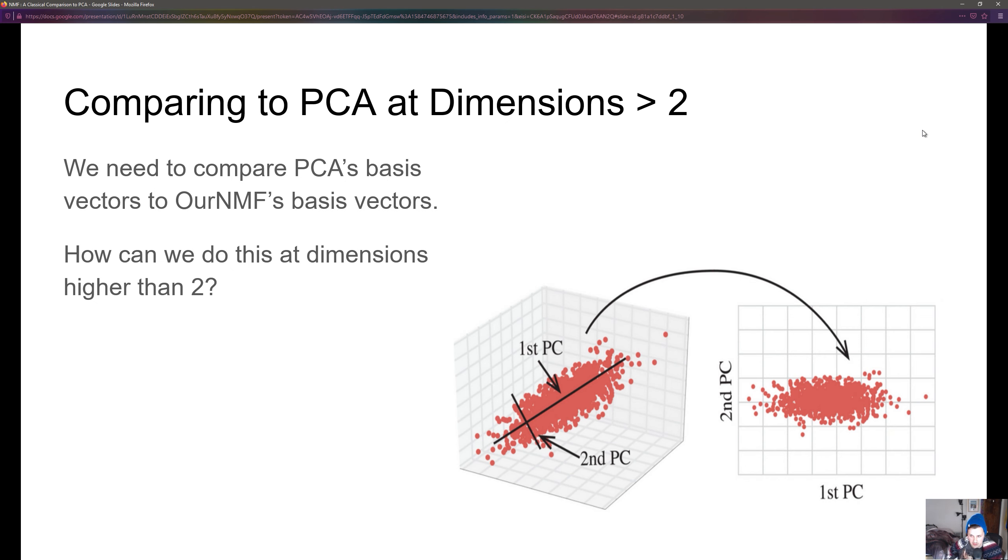When we talk about comparing PCA to NMF, it's pretty straightforward to do that at two dimensions. In this picture we can see that we have gotten two principal components from either NMF or PCA and we can project the data cluster onto those basis vectors and visualize the data in two dimensions.